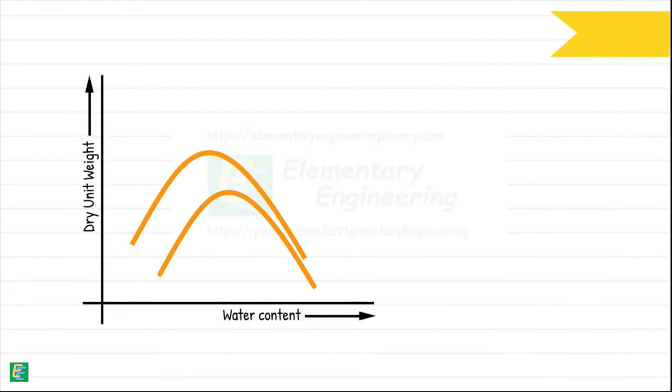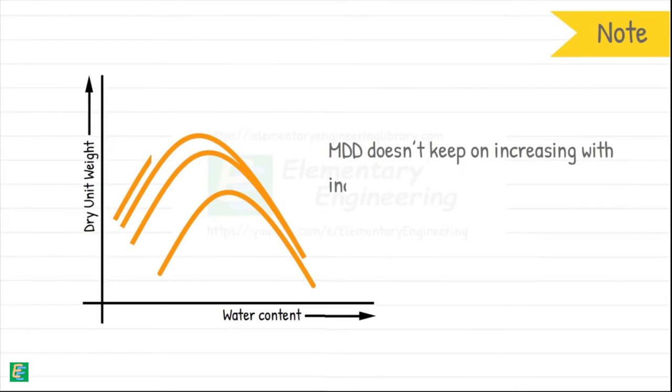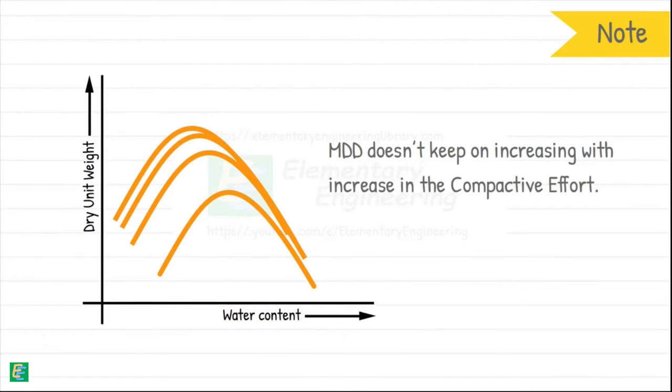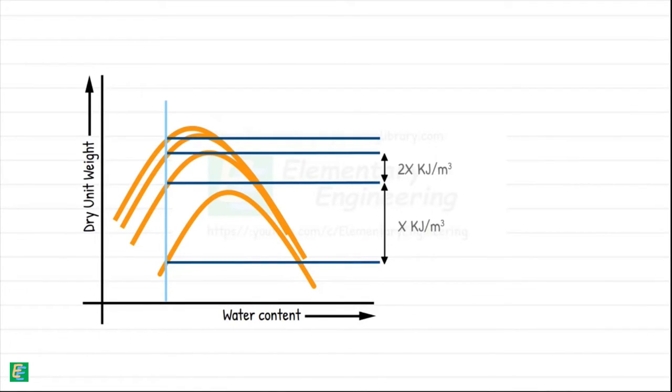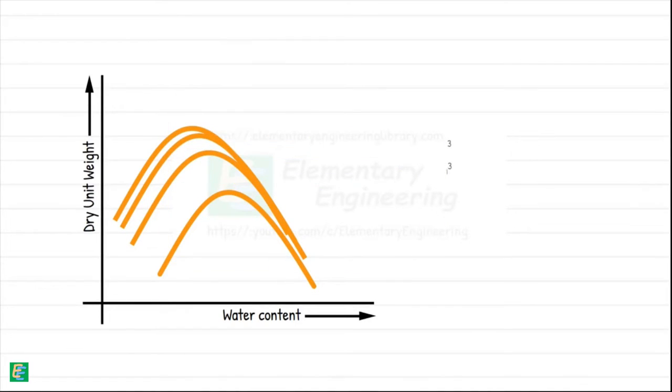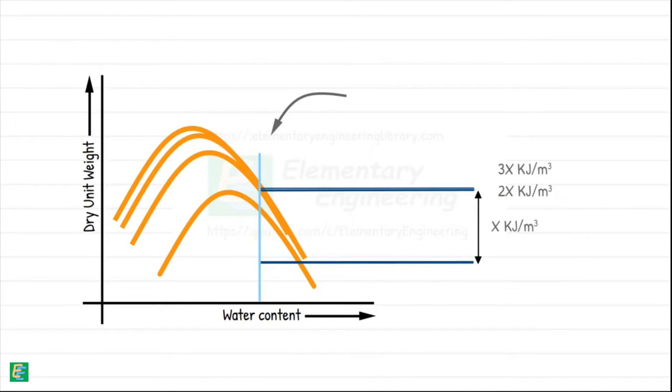We should also note that the maximum dry unit weight doesn't keep increasing with an increase in compactive effort. The margin of increase for a certain increase in compactive effort gets smaller and smaller, especially on the dry side of the optimum moisture content, while on the wet side, there is hardly an increase at all. Hence, to achieve optimum compaction, one needs to find the right balance.